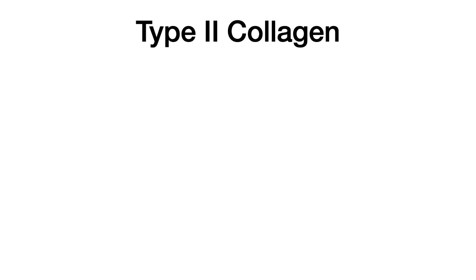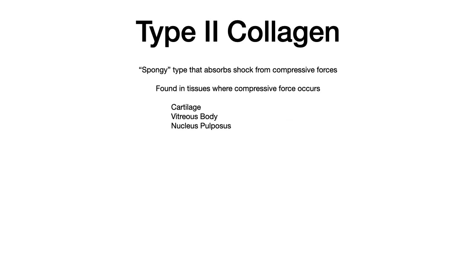Let's roll into type 2 collagen. Type 2 collagen is the spongy type of collagen, and its responsibility is to absorb shock from compressive forces. Perhaps unsurprisingly, it's found in tissues where compressive force occurs: cartilage, the vitreous body, and nucleus pulposus. For type 2 collagen, there's no disease you need to memorize. Really the only thing you need to know are those three tissues — cartilage, vitreous body, and nucleus pulposus — and memorize that those are all comprised of type 2 collagen.